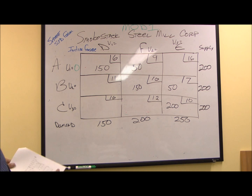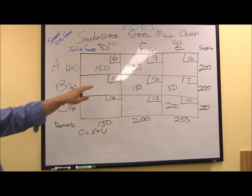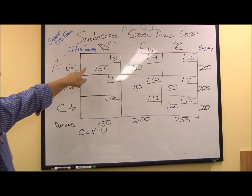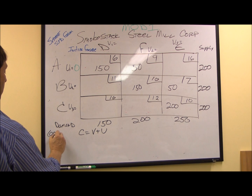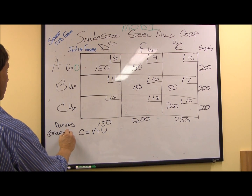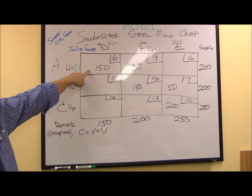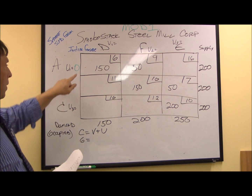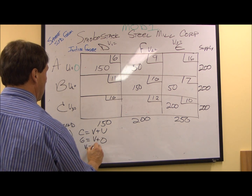The way we calculate them is simply C equals B plus U. Our C is our constant — in this case, it's our per unit shipping cost. We use those to calculate the indices at all the occupied cells. We have an occupied cell at Anaheim to Detroit. We know our per unit shipping cost is six, and our index for U1 is zero, so V1 equals six.